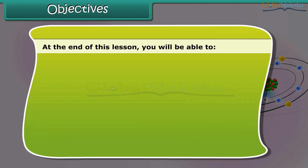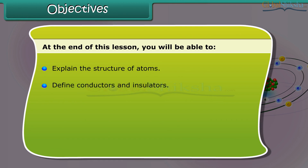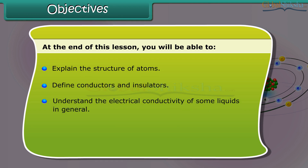At the end of this lesson you will be able to: explain the structure of atoms, define conductors and insulators, understand the electrical conductivity of some liquids in general, and identify the chemical effects of electric current.